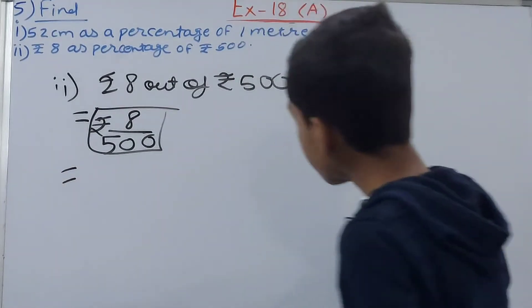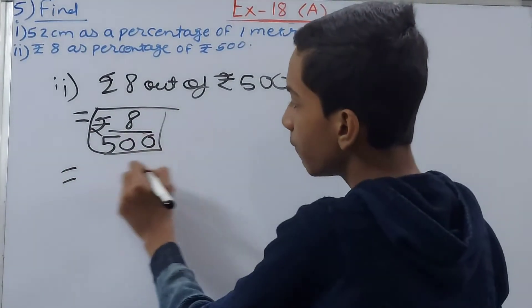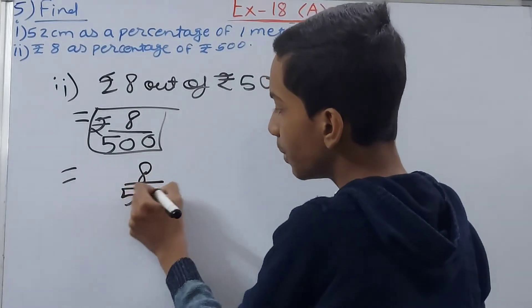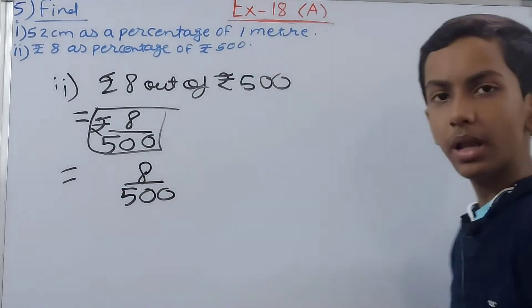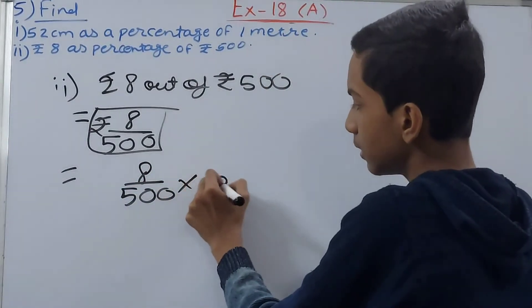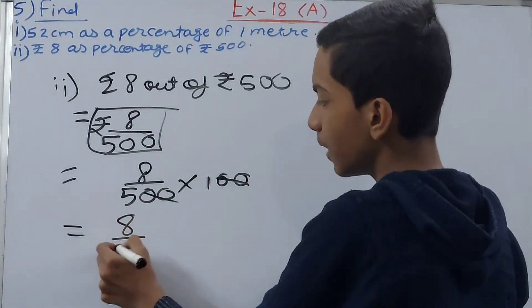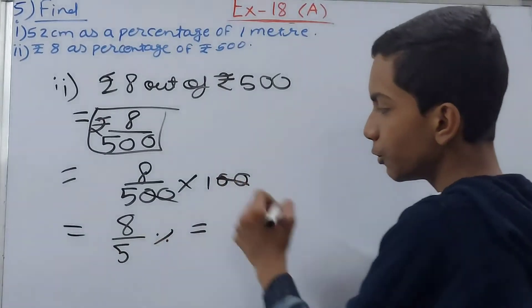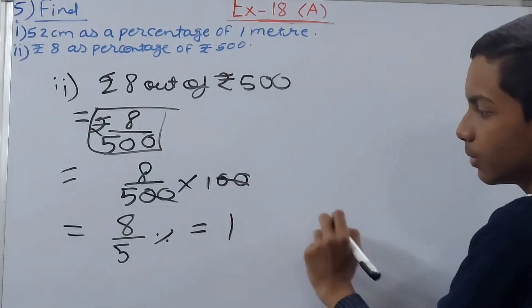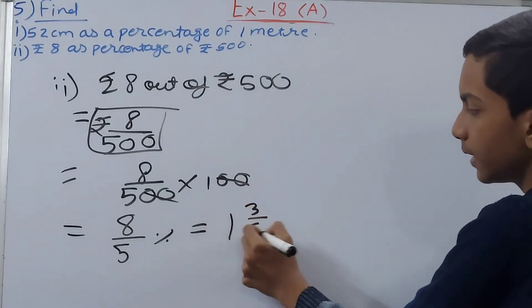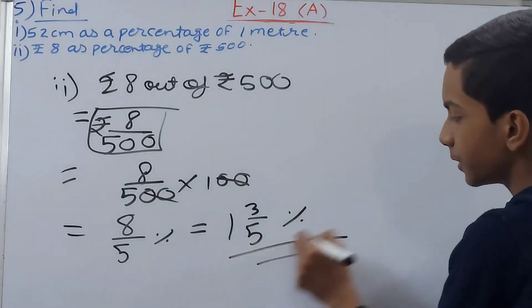Now for percentage, what we will do is multiply by 100. So cut this 0 and this 0. So 8 upon 5 percent, or you can convert this into mixed fraction, so 1 whole and 3 upon 5. 1 whole 3 upon 5 percent, this becomes our answer.